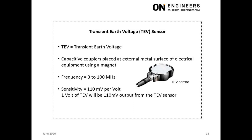The TEV sensor is a capacitive probe with a frequency response of 3 to 100 MHz. A typical sensitivity is 110 mV per volt, meaning 1 volt of TEV will output 110 mV.